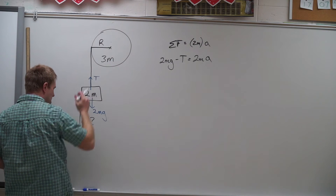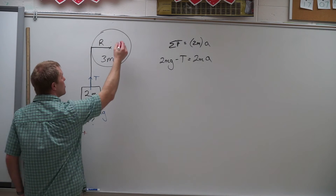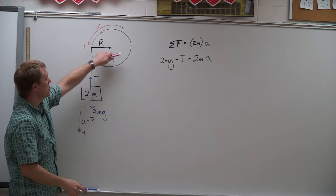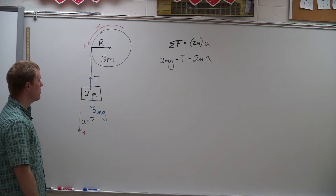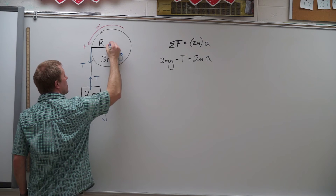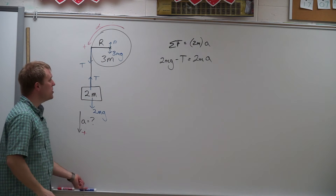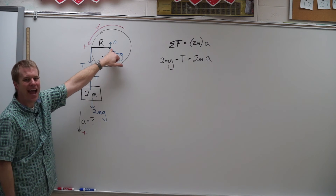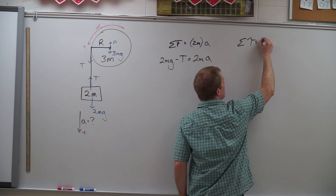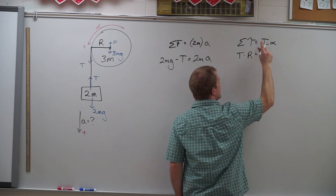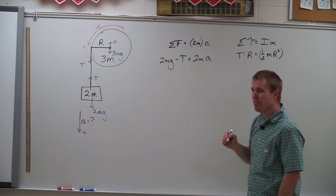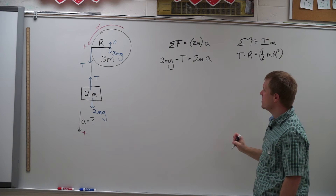Our second object up here is rotating, so we need to identify the direction of its angular acceleration and make that positive. Counterclockwise is my positive direction, so any torques counterclockwise will be positive. Drawing my free body diagram, I have tension here, 3mg here, and a supporting normal force. The normal force and the 3mg don't produce any torque because they're at the axis of rotation. My tension is producing positive torque, so the sum of the torques equals I alpha: tension times radius equals one-half mr squared — the moment of inertia for a disk — times alpha.